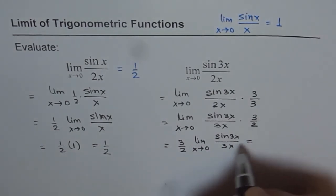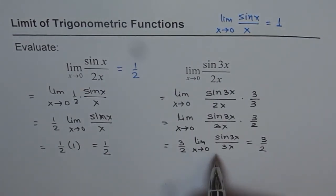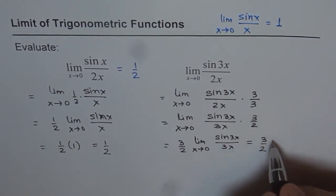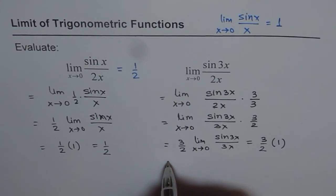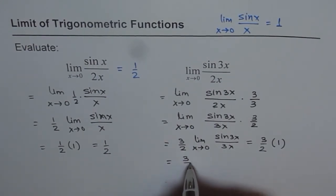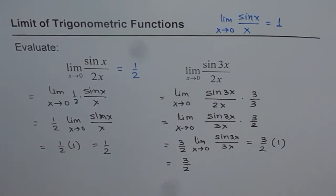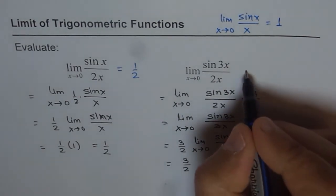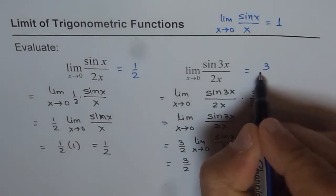And as expected, we get the answer as 3 over 2. Since limit of sin 3x over 3x is 1. So we can write down our answer, which is 3 over 2. So that is how such questions will be done.